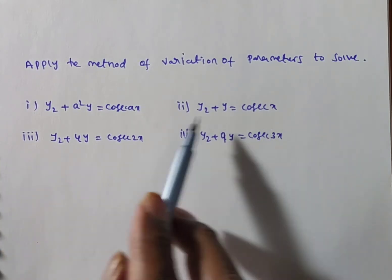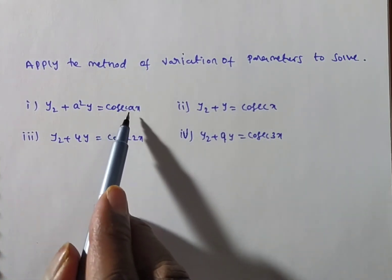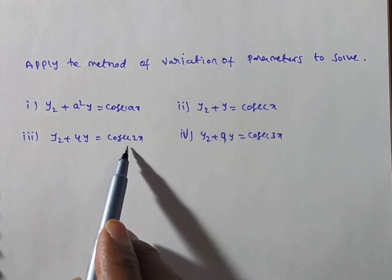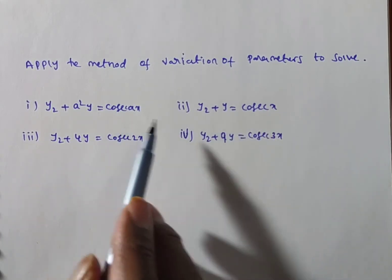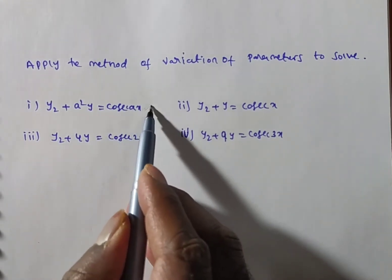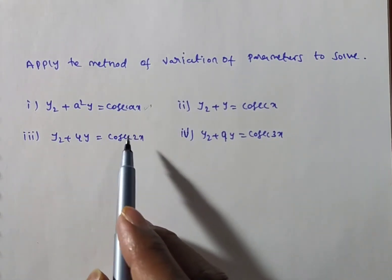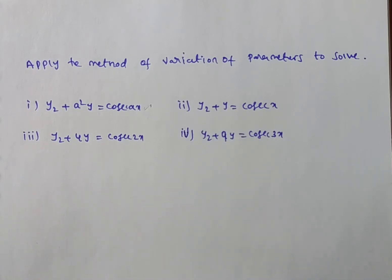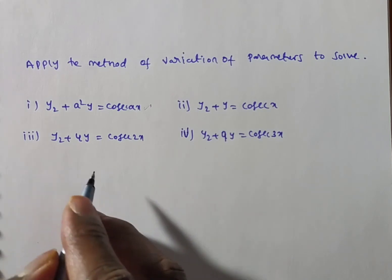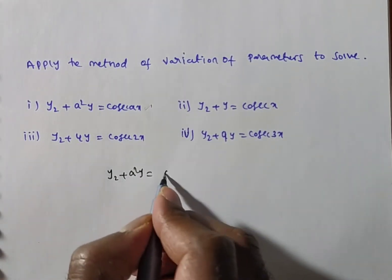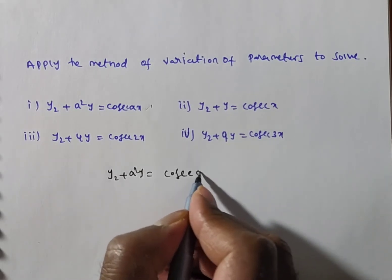You observe that all these problems are similar. If you replace 'a' by 1, you get the second problem; replace 'a' by 2, you get the third problem; 'a' by 3, the fourth problem. So I am solving the first general problem — if you replace 'a' by 1, 2, or 3, we get the remaining solutions. The given problem in operator form is: (D² + a²)y = cosec(ax).